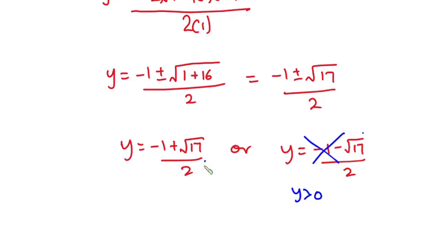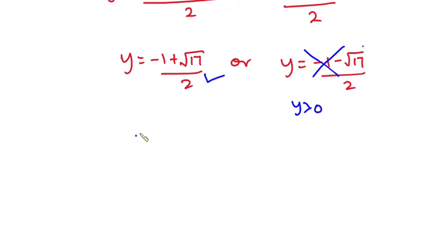Now let's focus on this one. We have y is equal to negative 1 plus square root of 17 over 2. But don't forget that y is equal to x to the 6th power. So when y is equal to this, we have x to the 6th power is equal to negative 1 plus square root of 17 over 2.